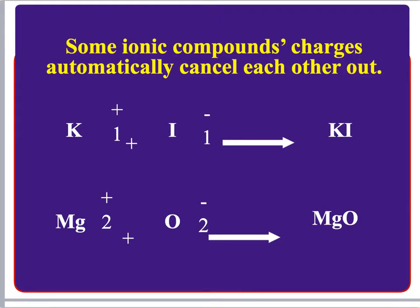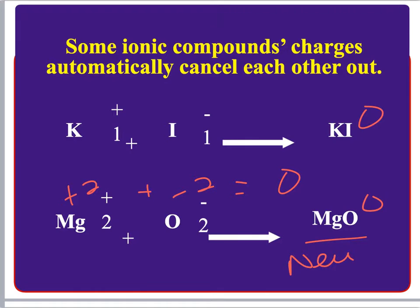When the charges automatically cancel, that's really nice. Potassium has a 1+ charge; iodine has a 1− charge — adding those gives zero. For magnesium with a 2+ charge combined with oxygen having a 2− charge, they also add up to zero — a neutral compound. When there's no charge written on the formula, that's indicating it is neutral, which is what we want.